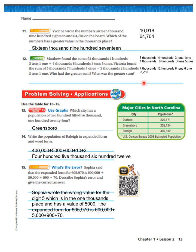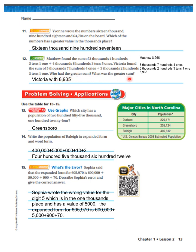We're halfway through — now let's work on Victoria's sum. Victoria had five thousands, seven hundreds, four ones plus three thousands, two hundreds, three tens, one one, for a sum of eight thousand nine hundred and thirty-five. Victoria had the greater sum with 8,935. Remember, boys and girls, you need to work these problems out — paper, pencil, whiteboard, whatever you need.